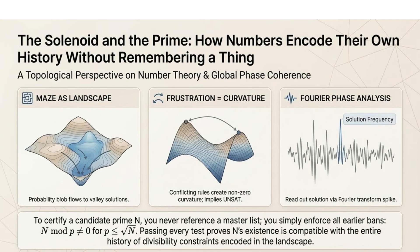The solenoid and the prime demonstrate how numbers encode their own history. In the maze as a landscape, probability flows to valley solutions. Conflicting rules create non-zero curvature, implying insolvability. We can read out the solution via a Fourier transform spike.